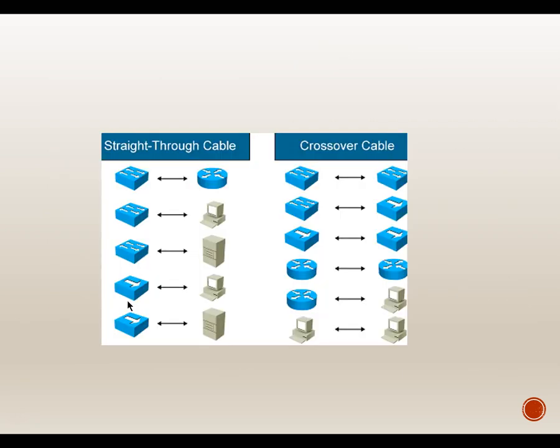Here's a summary chart of straight-through versus crossover cables. Straight-through cables are used for: Ethernet port on a router to a switch, computer to a switch, server to a switch, and printer with RJ45 to a switch. Crossover cables (like-to-like) are used for: switch to switch, switch to hub, hub to hub, router Ethernet to router Ethernet, and computer NIC to computer NIC.